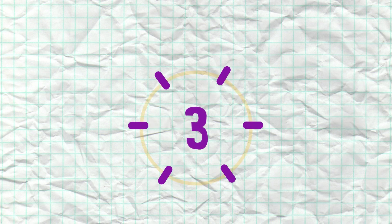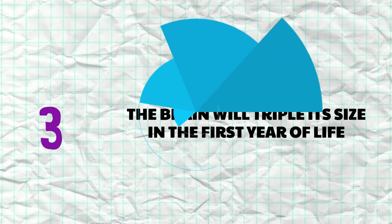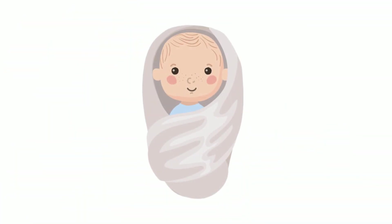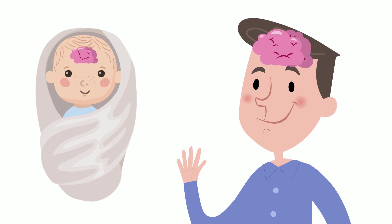Number 3: The brain will triple its size in the first year of life. At birth, the average baby's brain is about a quarter of the size of the average adult's brain.